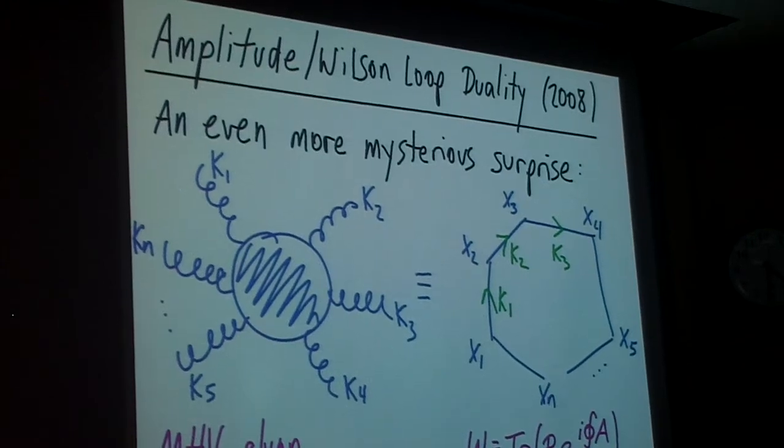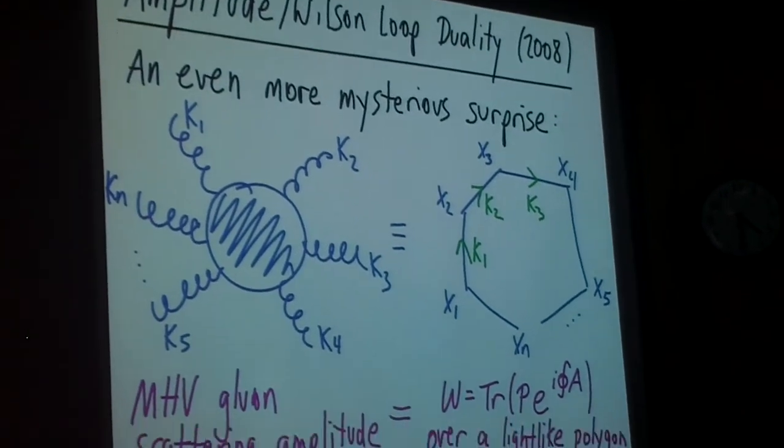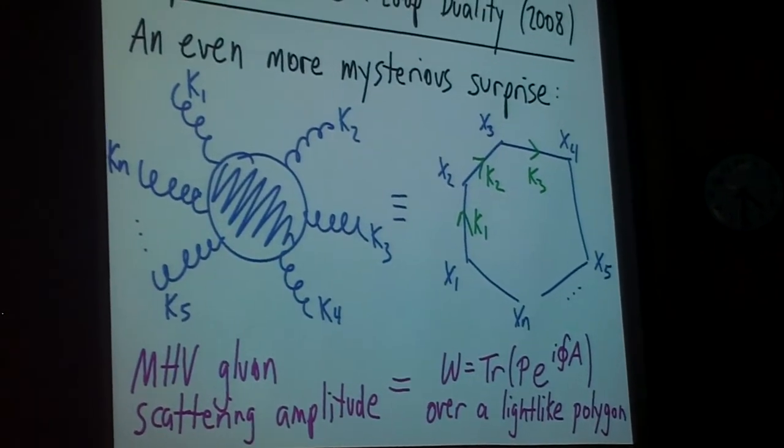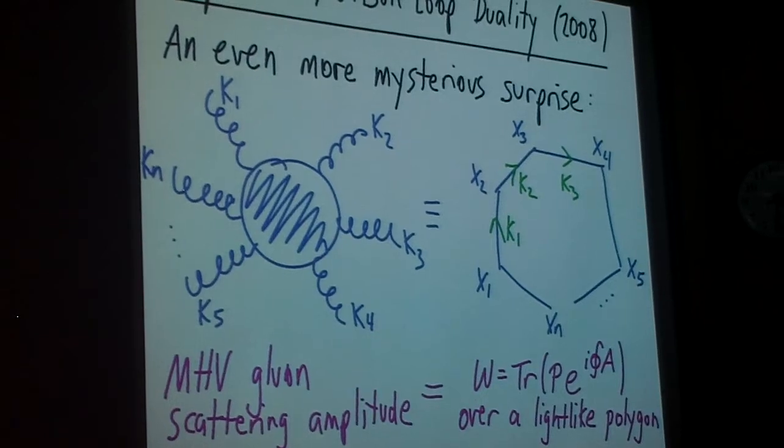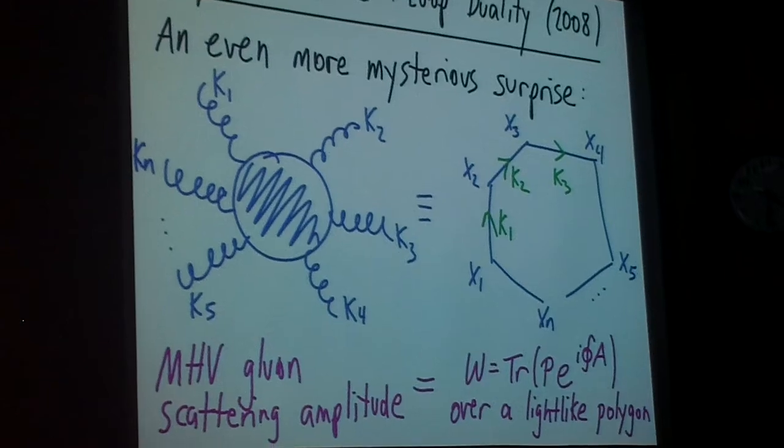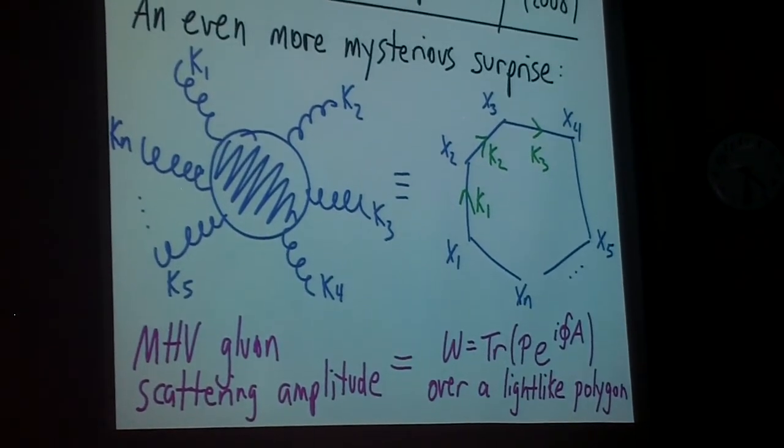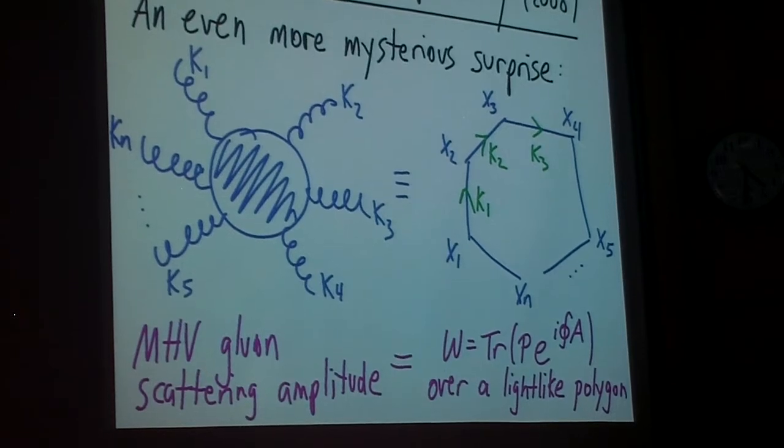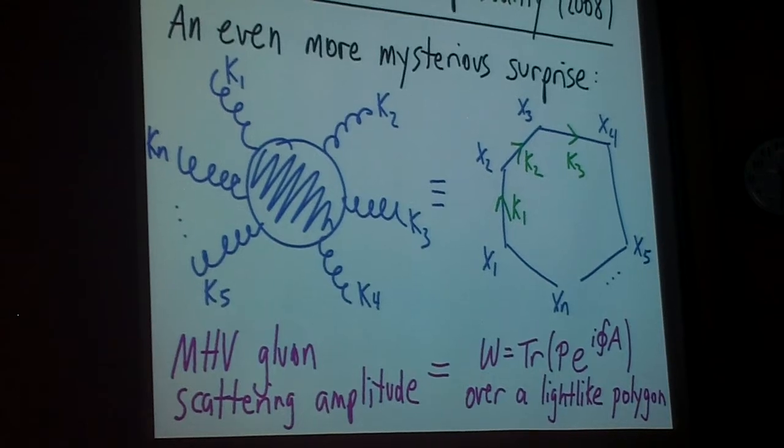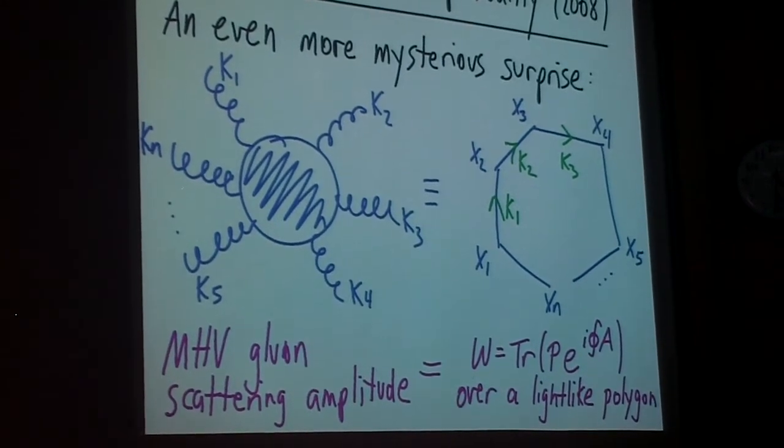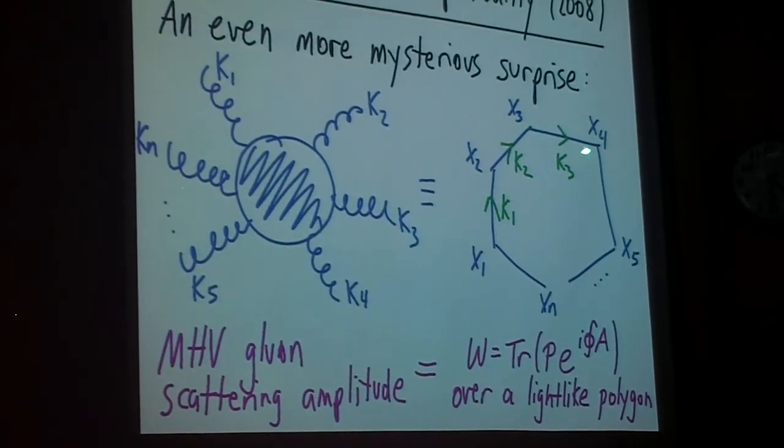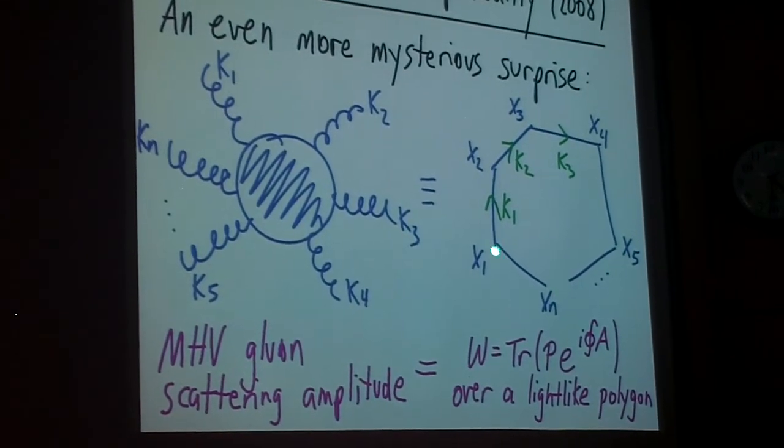But the statement is the following. That if you look at the n-particle MHV gluon scattering amplitude, it is exactly equal to a certain Wilson loop. And the, okay, so Wilson loop, expectation values of Wilson loops are other very nice gauge invariant observables that you can calculate and study in Yang-Mills theory. And the corresponding Wilson loop is built as follows. You take your null vectors, which you know have to sum to zero by momentum conservation, and you stack them one after the other, end to end. By momentum conservation, they close, they form a closed loop.